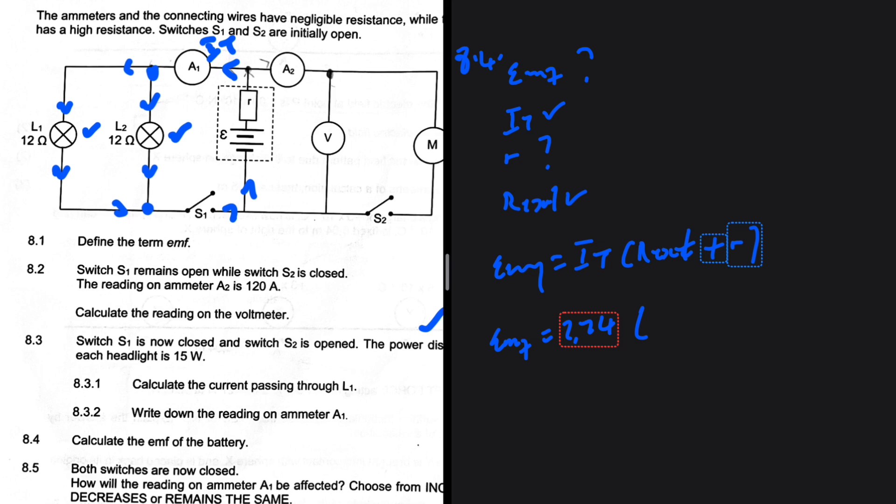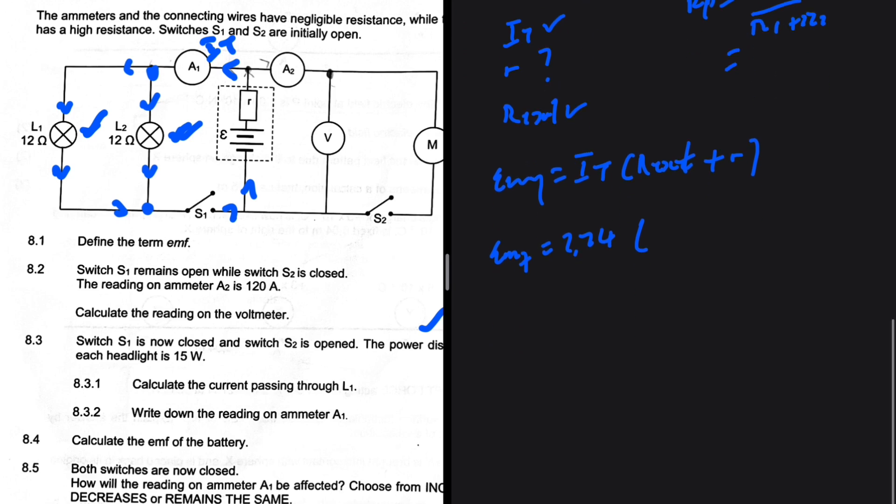R external we need to calculate R external, which will be Rp, as a consequence of those two satellites. So Rp will be equal to R1 multiplied by R2 divided by R1 plus R2.